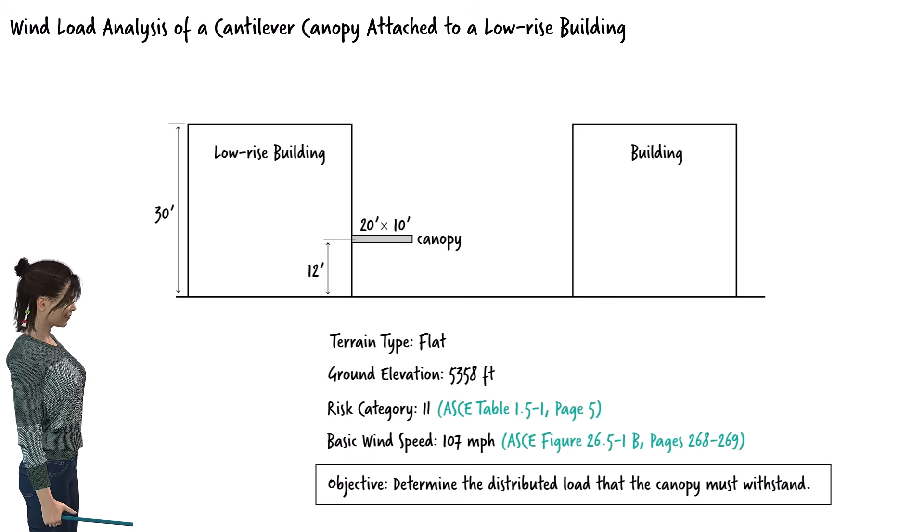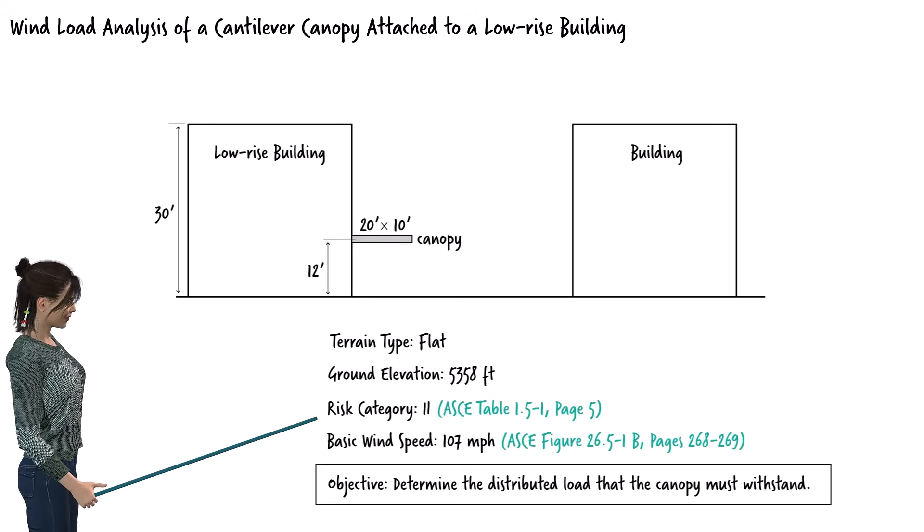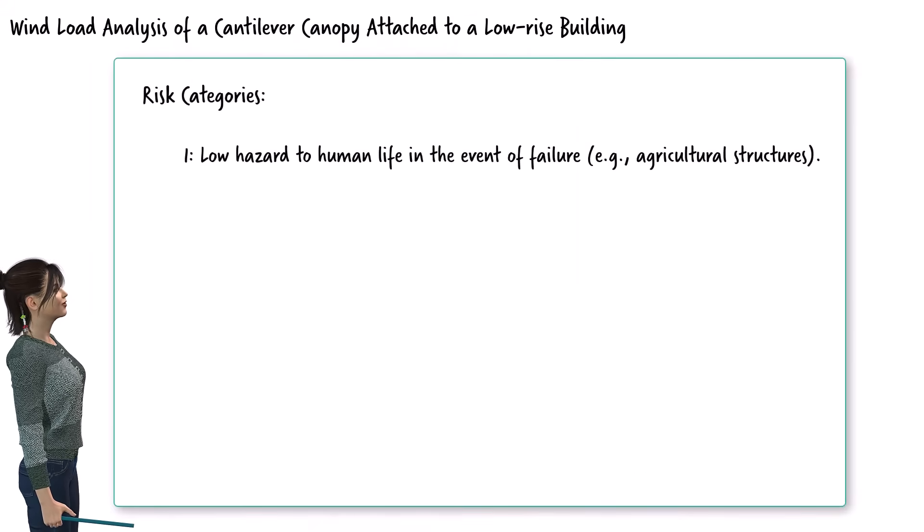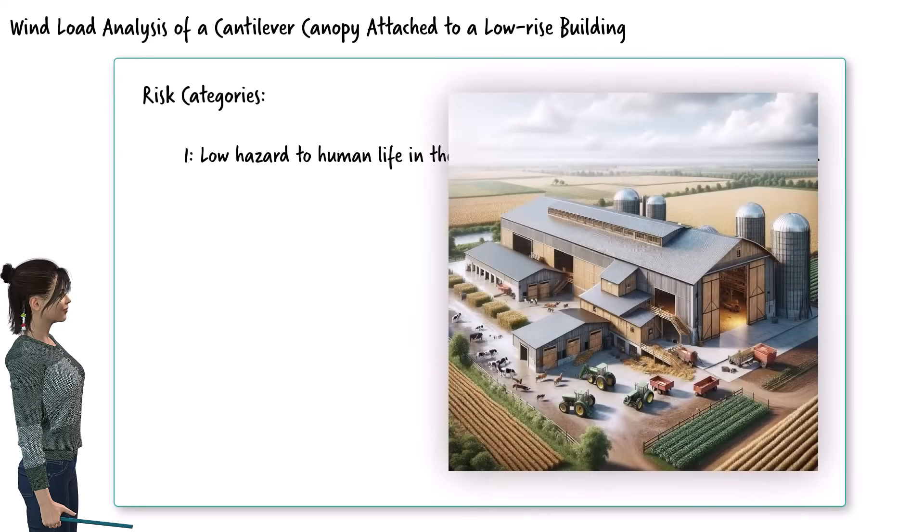The ASCE standard categorizes risk levels for structural design based on a building's occupancy and function. There are four risk categories. Category 1 refers to structures that pose a low hazard to human life in the event of failure, such as some agricultural facilities.